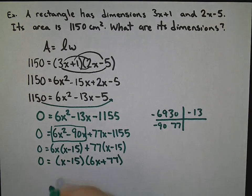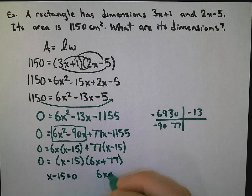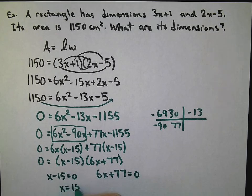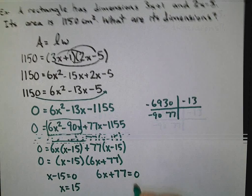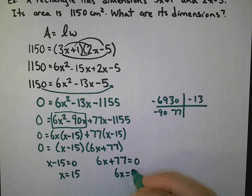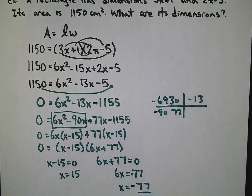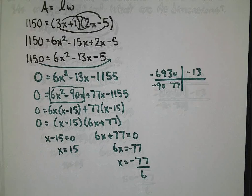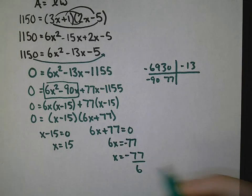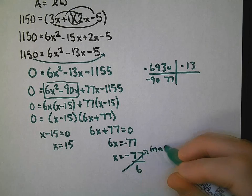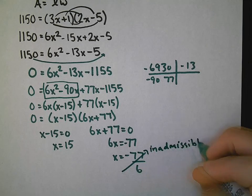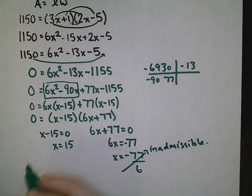Both of these must be set equal to zero. Similar to before. In the first equation we get x = 15. In the second equation we get 6x = -77, so x = -77/6. Which one of those doesn't make sense? Well, it doesn't make sense to have a negative width or negative length. So this one we say is inadmissible. We can't use that one. So x = 15.